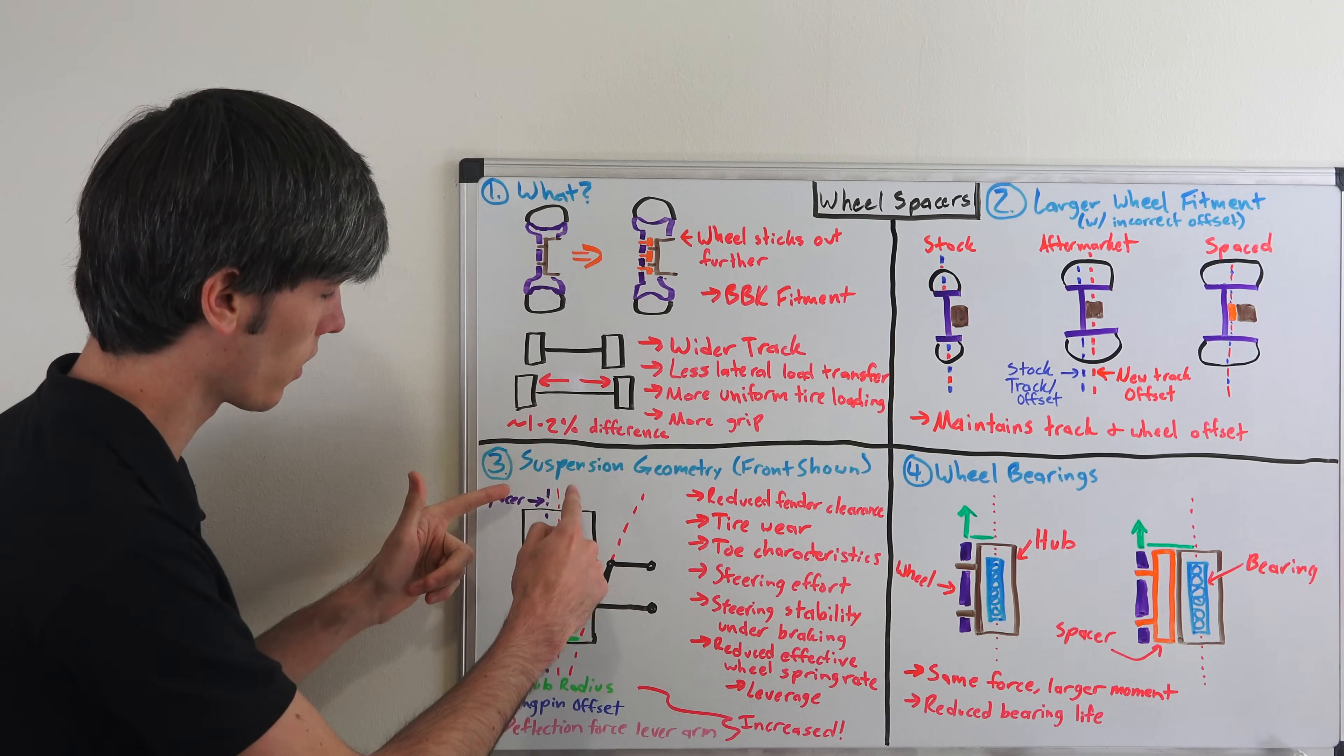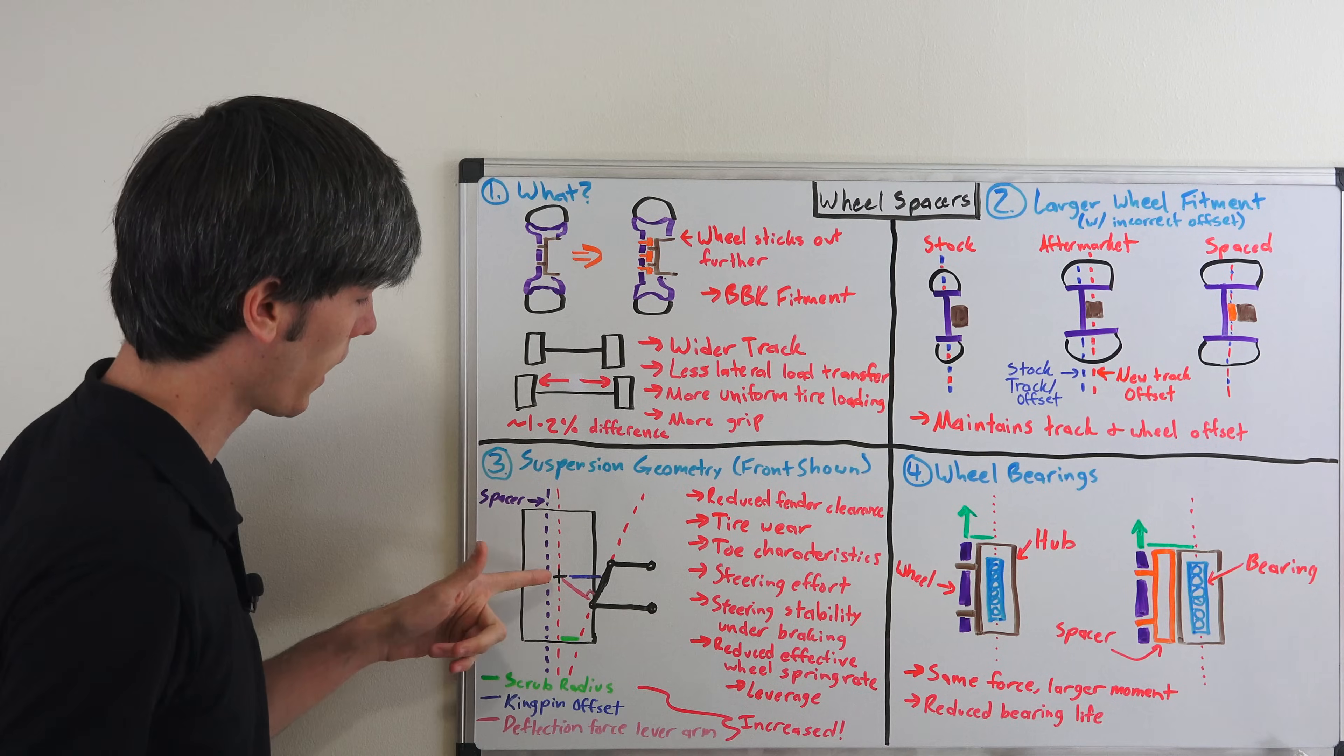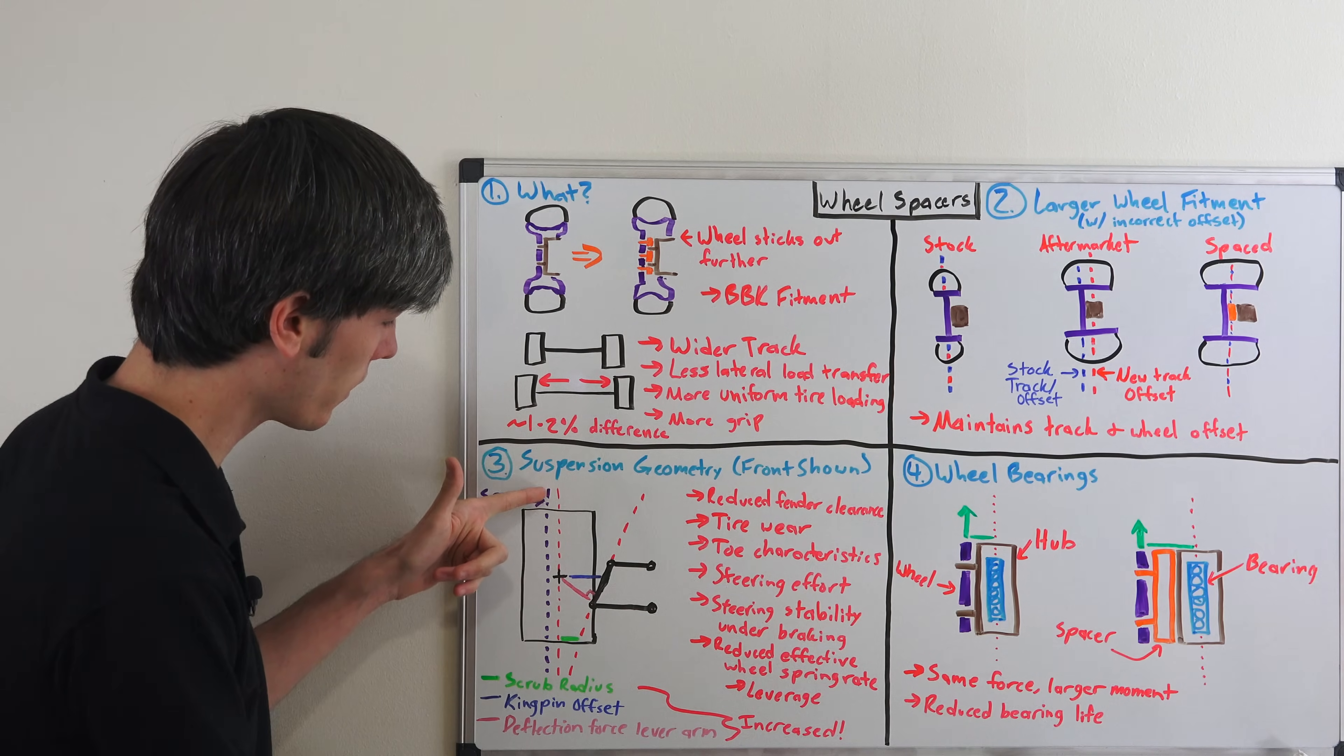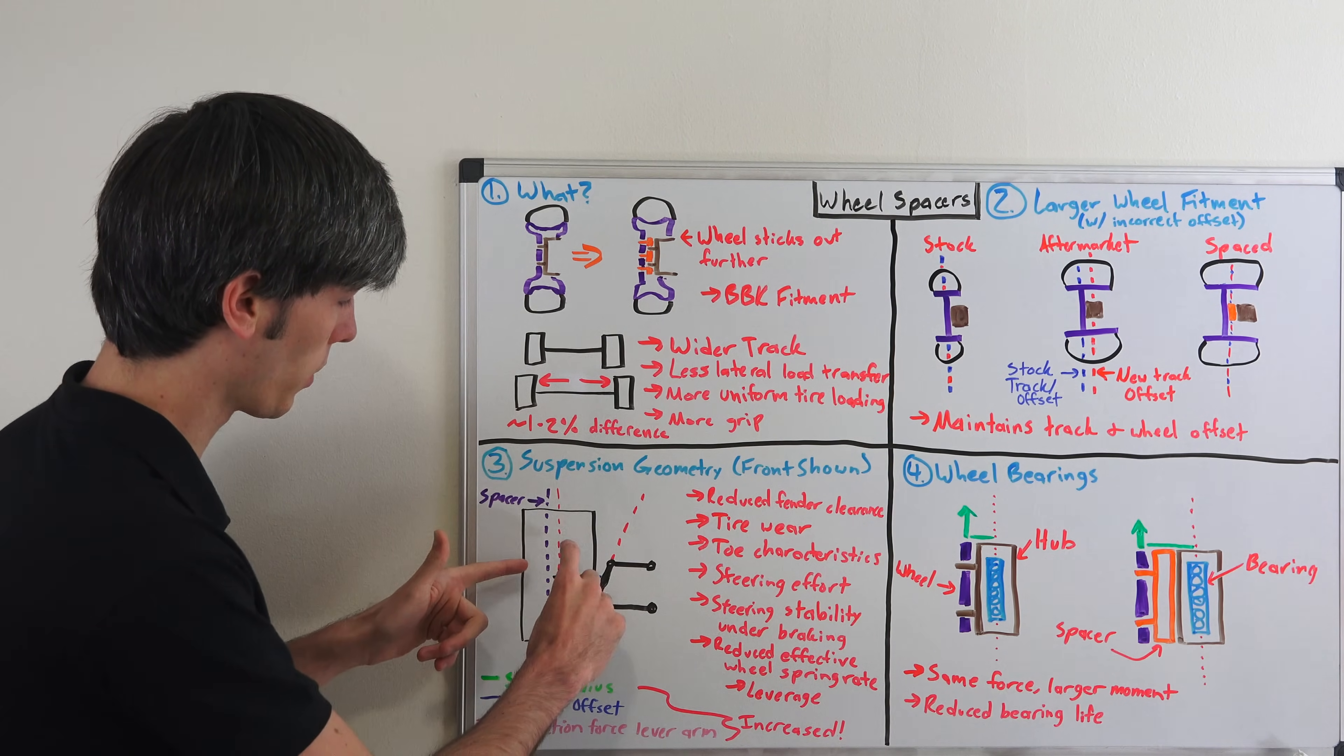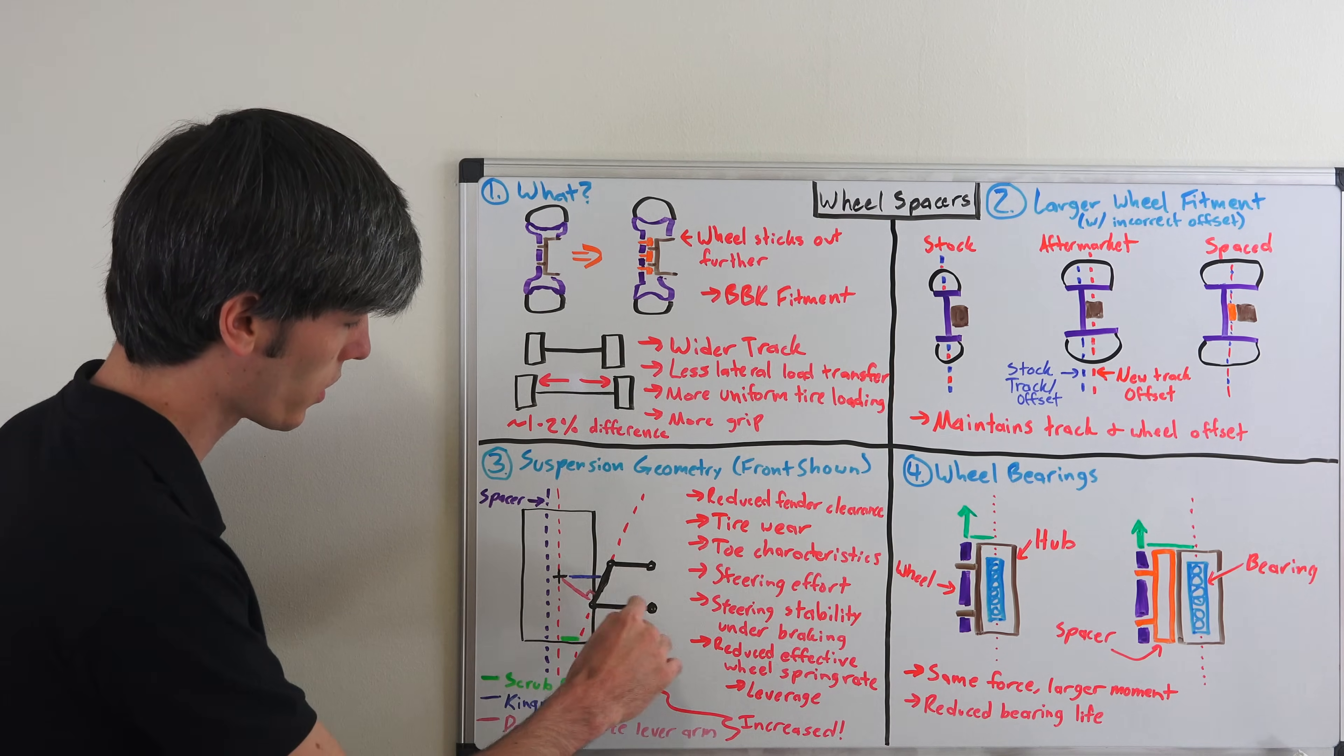So what we're looking at here is a double wishbone suspension. Here's our tire and here's the center point of that tire. Here's a center line of the tire. And then this purple line is if we were to add a spacer, that's where the center line of the tire would be pushed out to. And so here's our suspension.